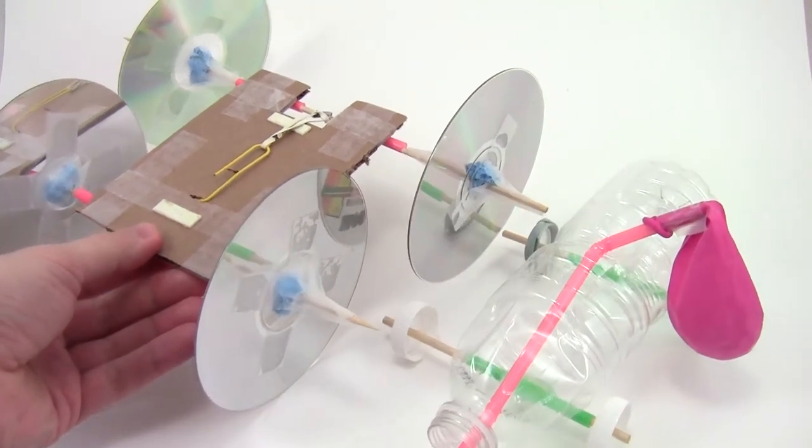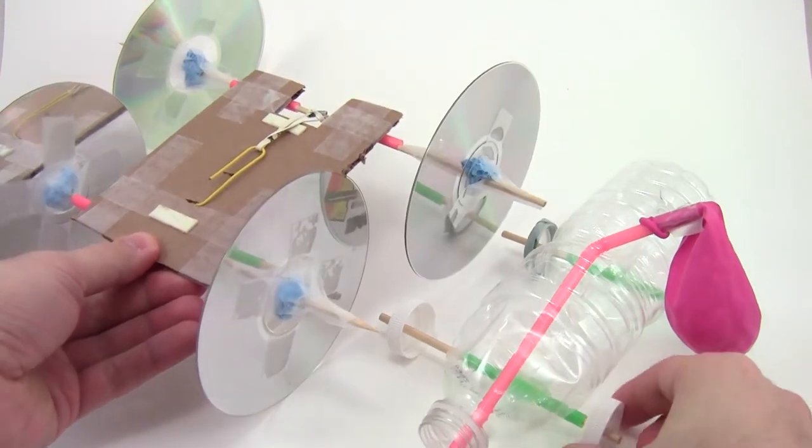This quick video will show you how to make an axle for a rubber band car like this or a balloon car like this.